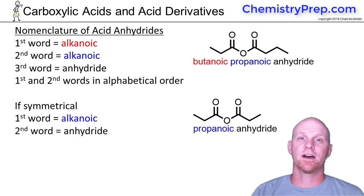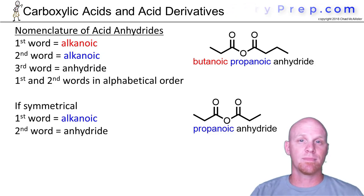The next derivative we'll look at naming is the acid anhydride. An acid anhydride is made from two carboxylic acid molecules, maybe identical, maybe different.